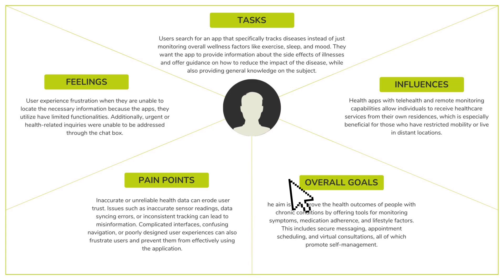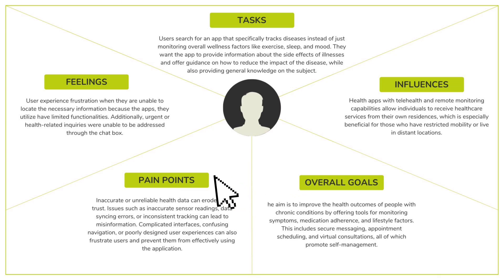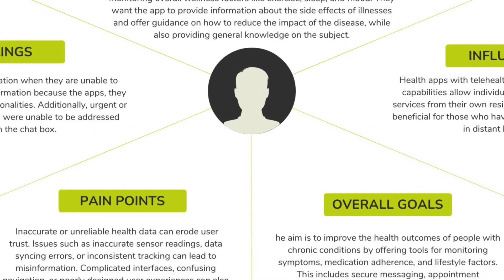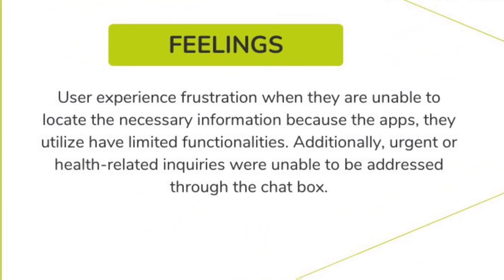Our empathy map is divided into five quadrants, each representing feelings, tasks, influences, overall goals, and pain points. The first quadrant focuses on the user's feelings, concerns, or ambitions, which are the most important aspect of users. For example, user frustration — users have experienced frustration when they are unable to locate the necessary information because the apps they utilize